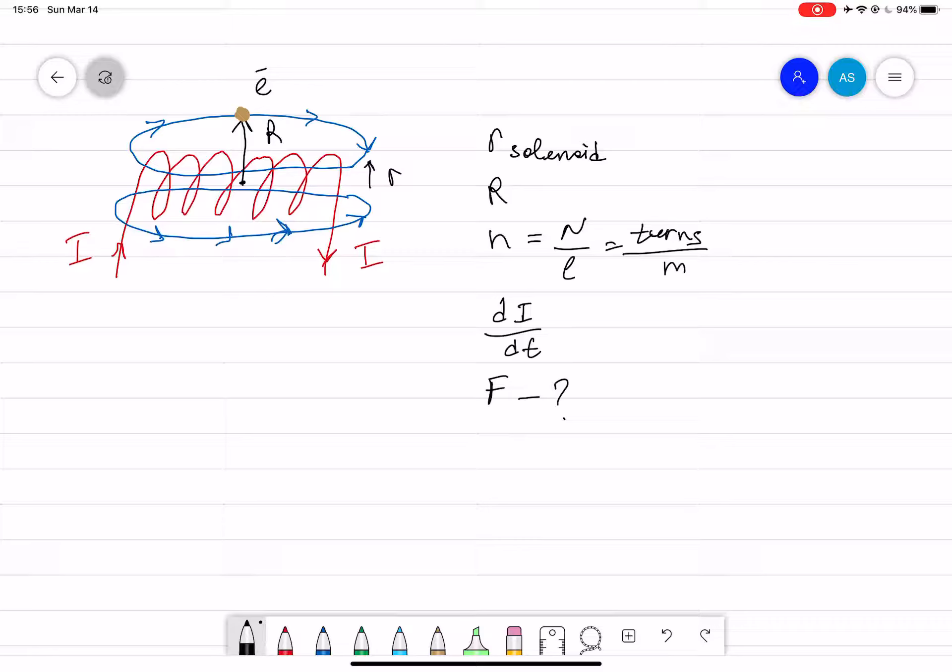First of all, we have a formula which can define the force acting on the charge, which is F equals qE. The q is well known for the electron charge, which is 1.6 times 10 to the power of minus 19 coulomb.